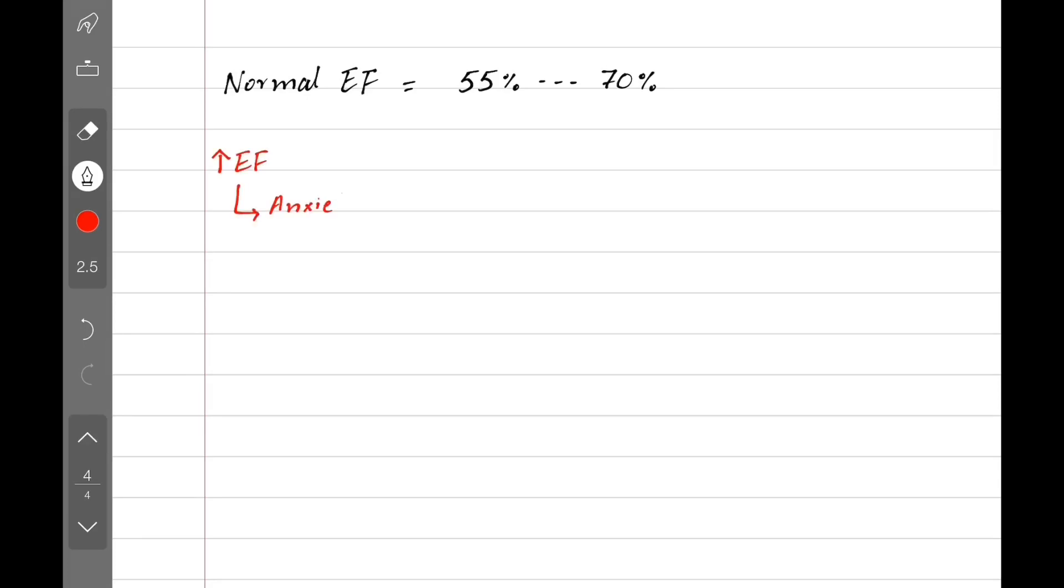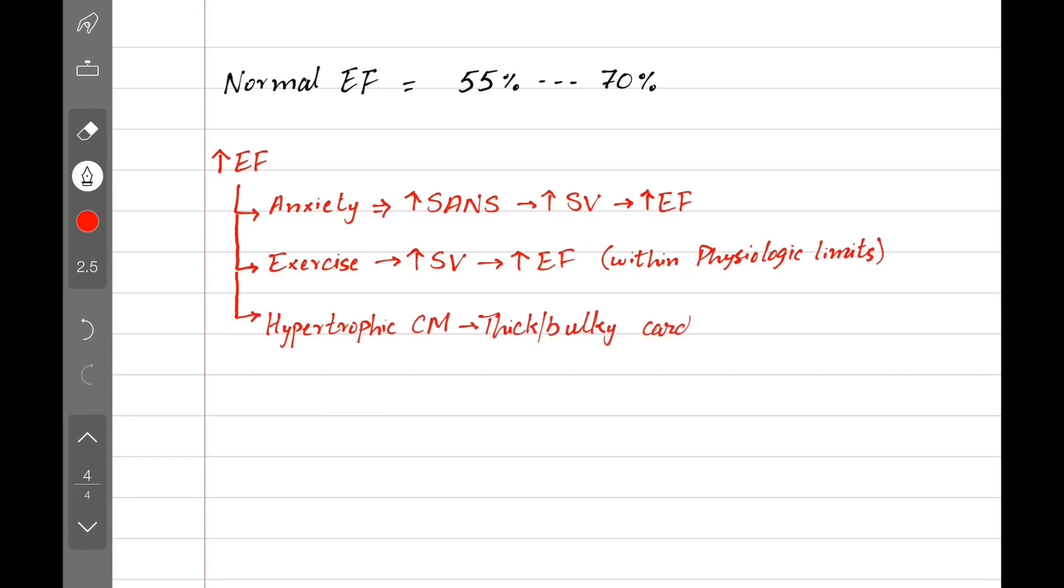For example, anxiety because of sympathetic system activation which increases stroke volume which increases ejection fraction. Exercise also increases stroke volume and ejection fraction but within physiologic limits. In hypertrophic cardiomyopathy, we have a strong bulky cardiac muscle which can contract strongly and push out more blood. This gives us increased stroke volume and ejection fraction.